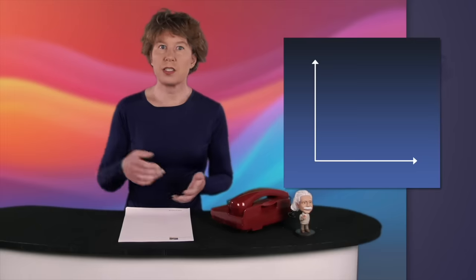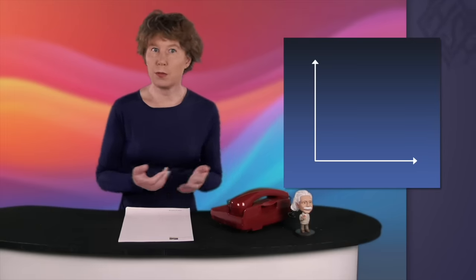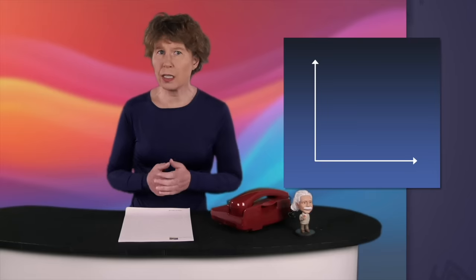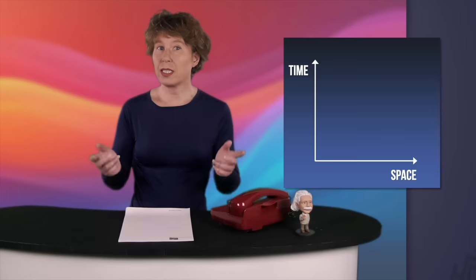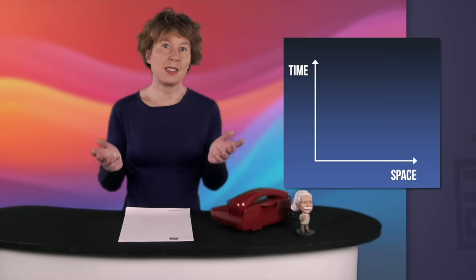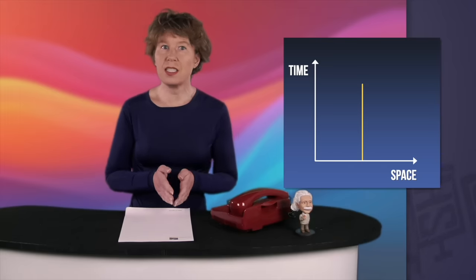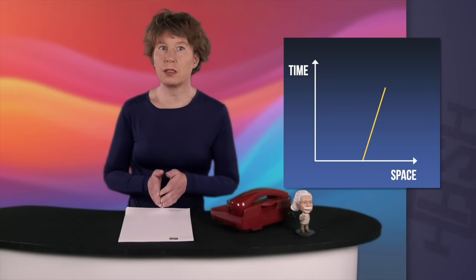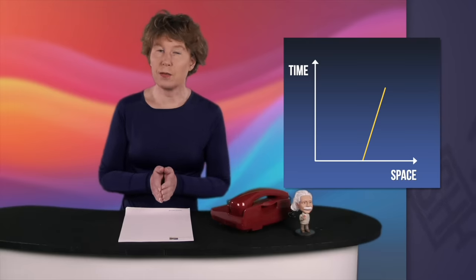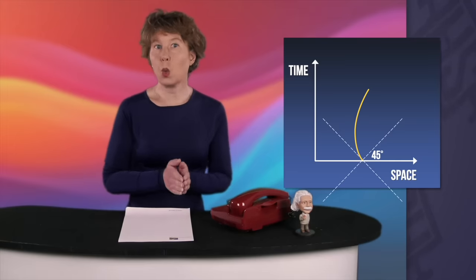The easiest way to see the difference is to draw a diagram. Since YouTube doesn't support four-dimensional graphics, we'll make do with just one dimension of space on the horizontal axis and time on the vertical axis. This is called a spacetime diagram. In this spacetime diagram, the motion of an observer who just sits still is described by a vertical line. That of an observer moving at constant velocity is a straight line at some angle to the vertical. By convention, the speed of light is at a 45-degree angle. The curve on which an observer moves in a spacetime diagram is called their world line.